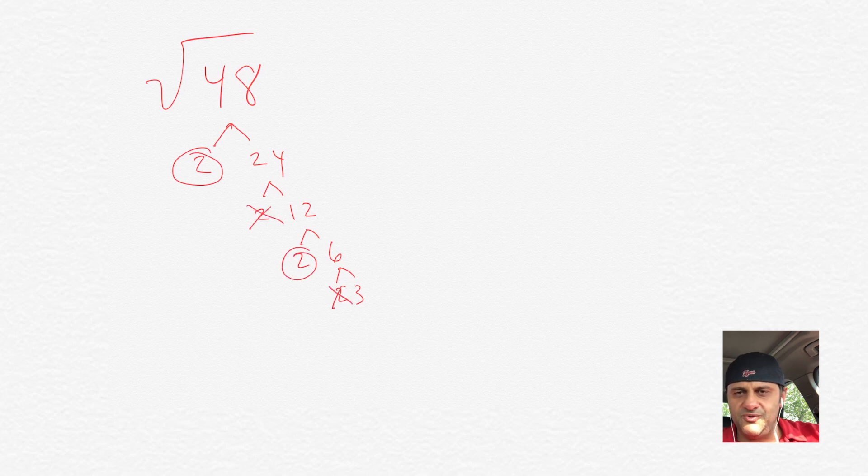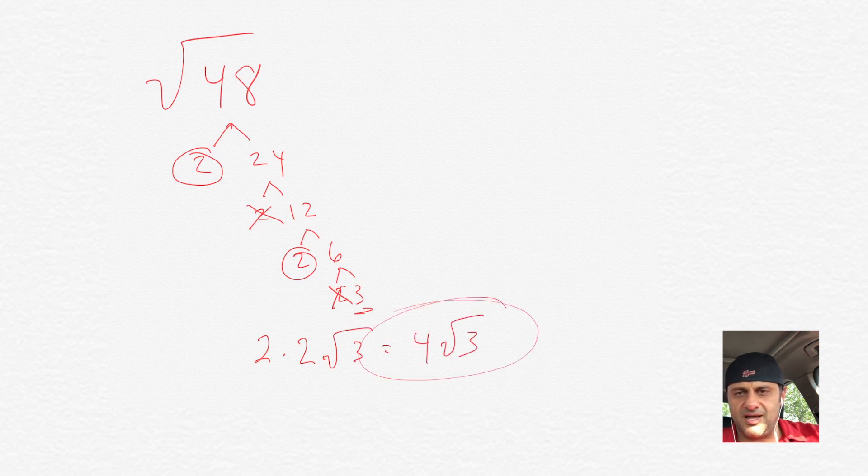And then you can keep 2 2s and cross out the other ones. And then when you have more than one number coming out, you multiply it. So you have a 2 times 2, and then the square root of 3 didn't break down. And 2 times 2 is 4. So that's the answer there. We have 4 square root of 3.